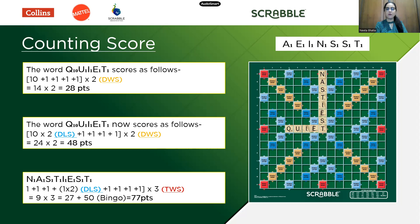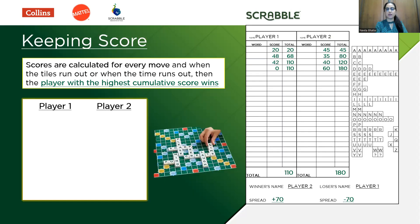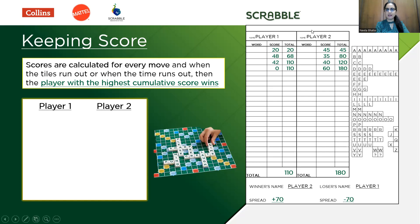Now let's see how to write scores and keep a score sheet during a game. The score sheet you see on the right side of your screen is just one version — there are various formats. The score sheet has to be maintained by both players. If player 1 and player 2 are playing, both keep their own separate score sheets. Player 1 is the person who has won the toss, and player 2's score is written in the next column.